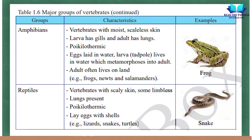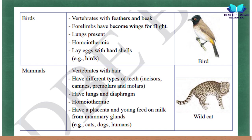Reptiles: vertebrates with scaly skin, some limbless; lungs present; poikilothermic; lay eggs with shells; examples: lizards, snakes, turtles. Birds: vertebrates with feathers and beak; forelimbs have become wings for flight; lungs present; homoiothermic; lay eggs with hard shells; example: birds. Mammals: vertebrates with hair; have different types of teeth (incisors, canines, premolars, and molars); have lungs and diaphragm; homoiothermic; have a placenta and young feed on milk from mammary glands; examples: cats, dogs, humans.